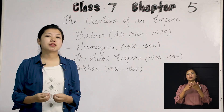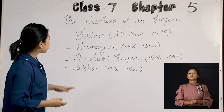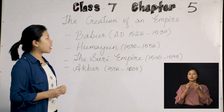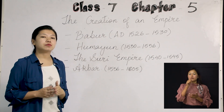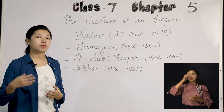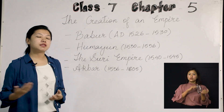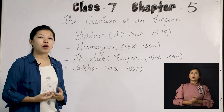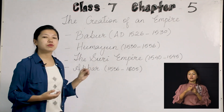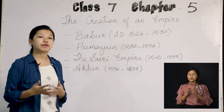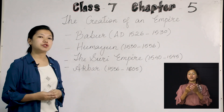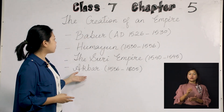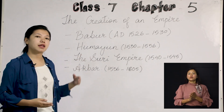Let me recap the Mughal Empire. The founder was Babur, who came from Central Asia to India to support the Lodi dynasty but ended up defeating them and taking control of the land. Later, Humayun took control of his father's possessions and became ruler of the Mughal dynasty. Then came the Suri Empire, where Sher Shah Suri was the greatest ruler — he took control for 15 years by defeating Humayun. But once Humayun defeated Sher Shah Suri, all the Suri Empire came under the control of the Mughal Empire once more.